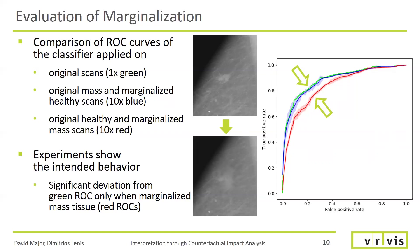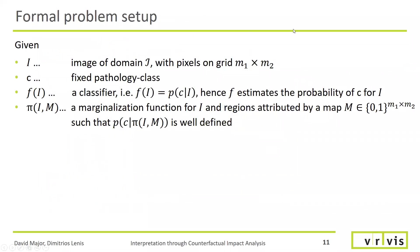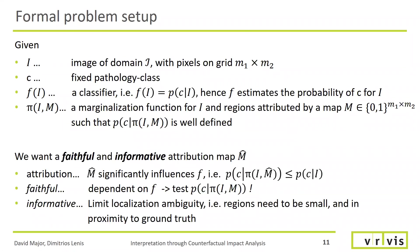Having made sure that we don't introduce new evidence for pathologies during marginalization, how can we find the salient regions? Formalized, we start from an image with pixels on a fixed regular grid, a fixed pathology class, and a classifier capable of estimating the probability for this pathology class. Additionally, we have our marginalization function, for which we know that its results don't violate the classifier's preconditions. We want a faithful and informative attribution map — meaning the map's regions influence the prediction significantly, thereby altering the predicted class. The map also needs to be informative, limiting localization ambiguity: regions need to be small and in proximity to the ground truth, adhering to the end user's expectations.